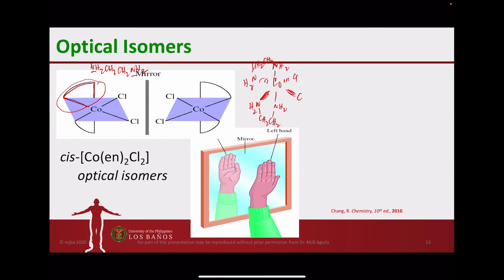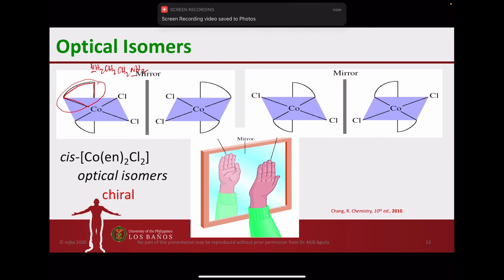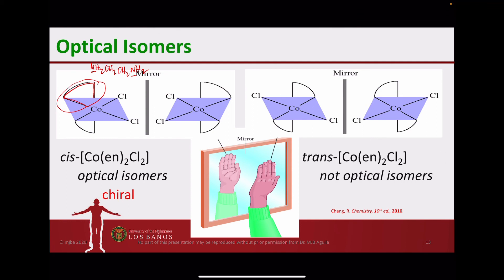When you consider the trans isomer, the two chloride ligands are opposite one another, and the positions of the ethylenediamine structures are also opposite one another. The two mirror images are actually superimposable with one another — if you try to overlap them, they match up perfectly. So the trans isomer is not an optical isomer; it is not chiral, or achiral.